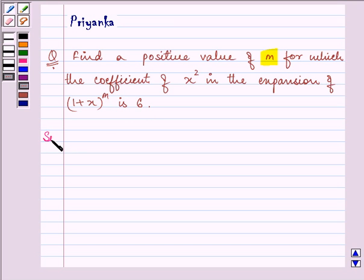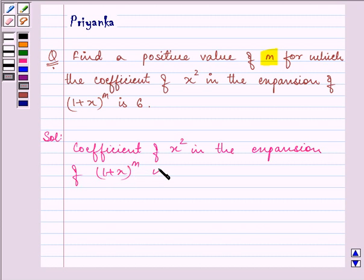Now let us quickly discuss this question. The coefficient of x raised to the power 2 in the expansion of 1 plus x raised to the power m is C(m,2).